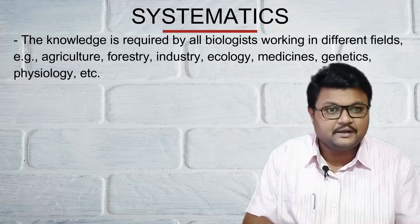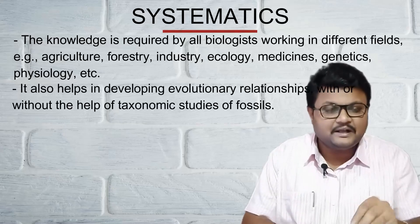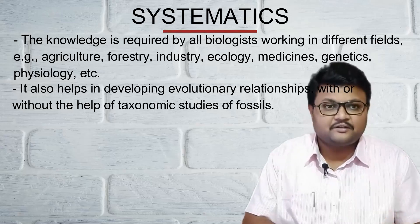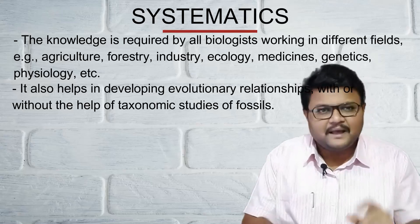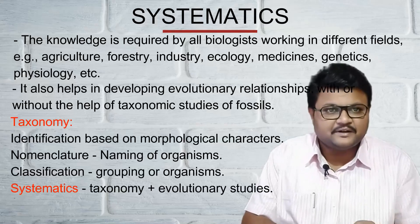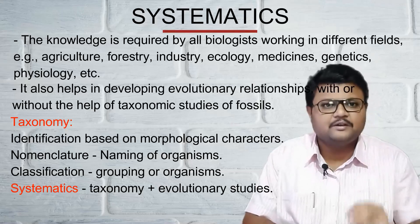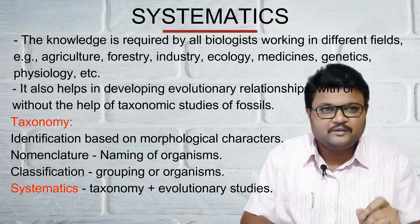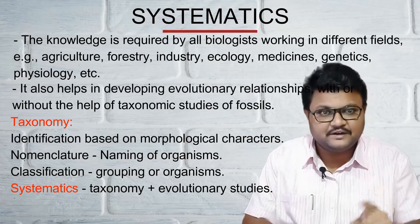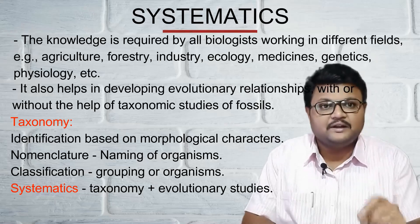Also genetics. Systematics can be done with or without the help of fossils. Taxonomy — what do you mean by taxonomy? There is a fine difference between taxonomy, systematics, and classification. Taxonomy is a branch of biology which helps in classifying and naming the organisms.